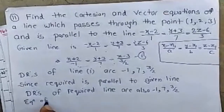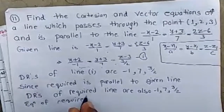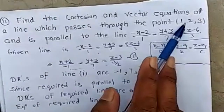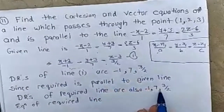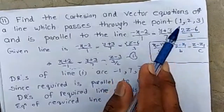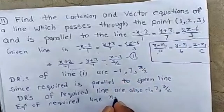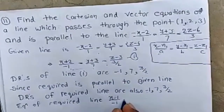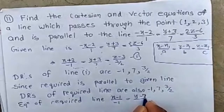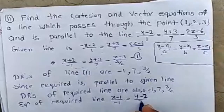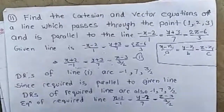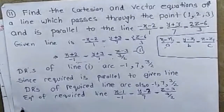The equation of the required line: since x1, y1, z1 are given as (1, 2, 3) and a, b, c are −1, 7, 3/2, the equation of the line passing through (1, 2, 3) with direction ratios (−1, 7, 3/2) is: (x − 1)/(−1) = (y − 2)/7 = (z − 3)/(3/2). This is the Cartesian equation of the required line.